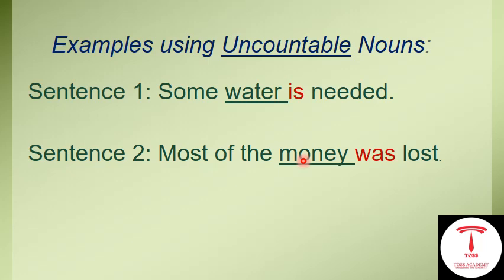Money is uncountable. We can say 'two dollars' but we cannot say 'one money, two monies, three monies' — therefore money is always uncountable. So to summarize: with SANAM pronouns, if followed by a countable noun, we must use a plural verb; if followed by an uncountable noun, we must always use a singular verb.